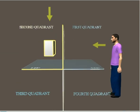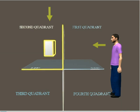In this quadrant, the object is placed above the horizontal plane and behind the vertical plane with respect to the observer.